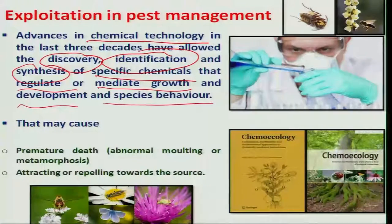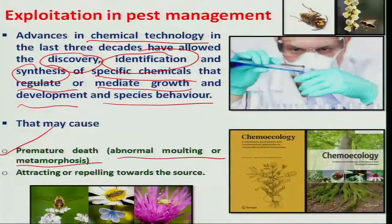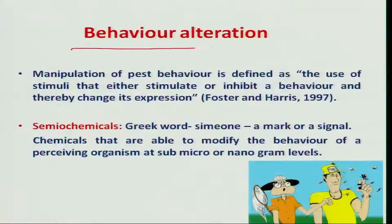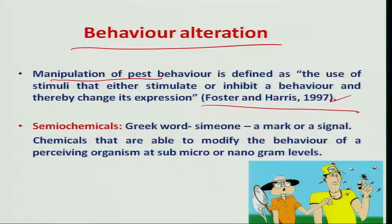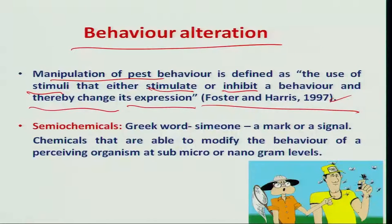When such chemicals are used, they cause premature death through abnormal molting or metamorphosis. At the same time, other chemicals attract or repel insects toward or away from a source. This behavioral alteration by chemicals was defined by scientists Foster and Harris in 1997: the manipulation of pest behavior is defined as the use of stimuli that either stimulate or inhibit a behavior, thereby bringing about changes in the behavioral expression of the insects. Chemicals that change insect behavior are called semiochemicals.